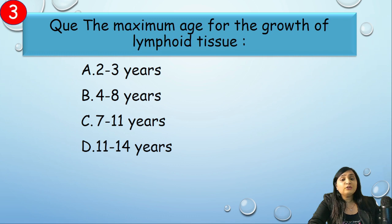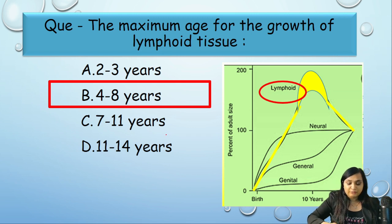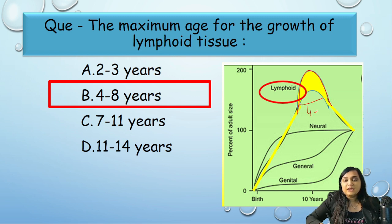The next question: the maximum age for growth of lymphoid tissue is — 2 to 3 years, 4 to 8 years, 7 to 11 years, or 11 to 14 years? Between the age of 4 to 8 years, when the child starts going to school, the growth of lymphoid tissue is maximum. We need to remember this curve where growth of lymphoid tissue — in the form of thymus and other lymph nodes — peaks between age 4 to 8 years.